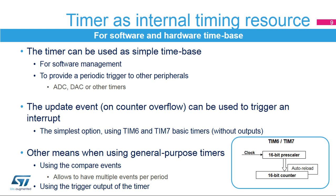The basic timers TIM-6 and TIM-7 are best suited for such a task, as they are the simplest timer derivatives with no input-output channel. It is also possible to generate internal timings using any other timer, using compare events or using the trigger outputs on any other timer. It is possible to generate multiple timing events with a single timer, using multiple compare channels.